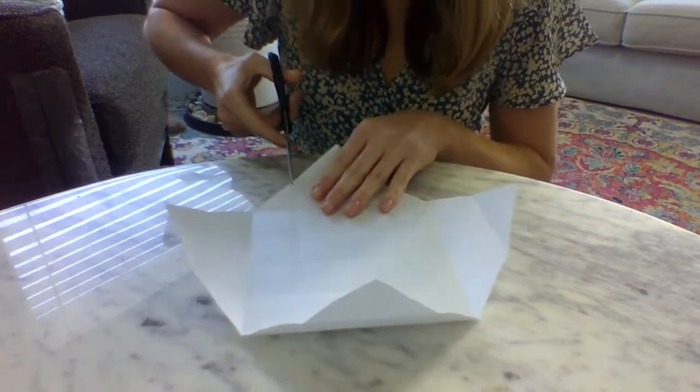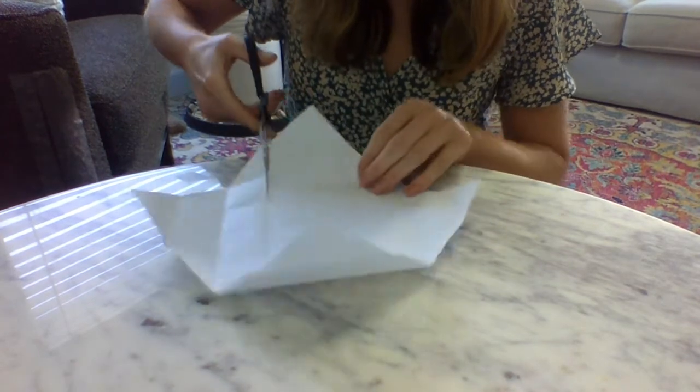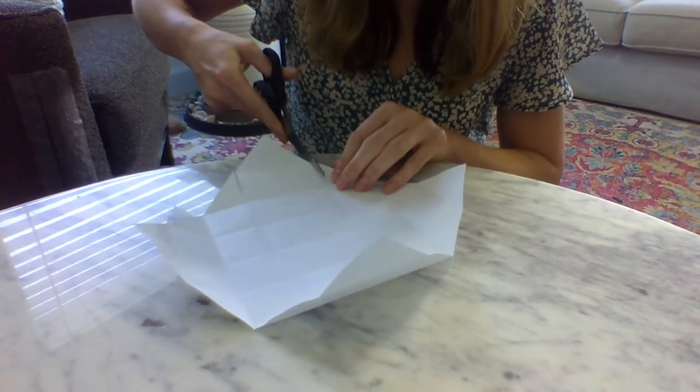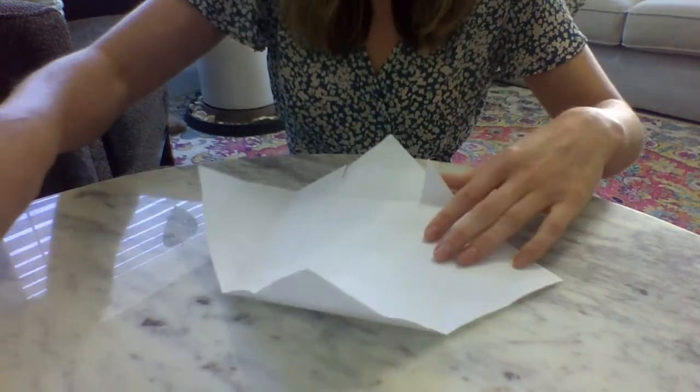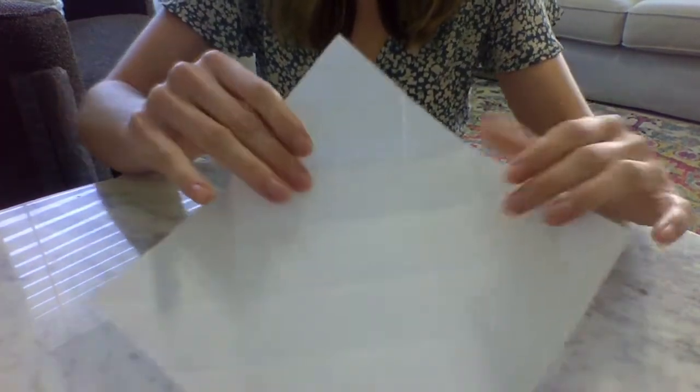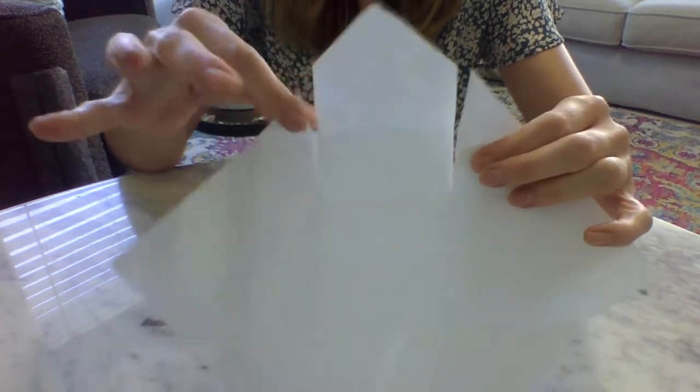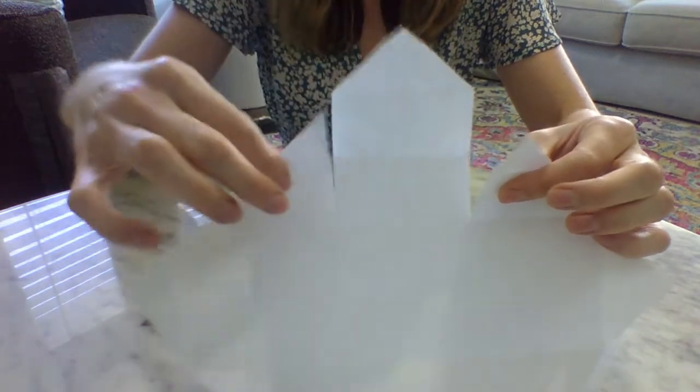So watch me cut it first and then you can even see easier exactly where I'm talking about. So here's one of my corners. I've cut these two sides. See how it kind of ends up looking like a little house right there?